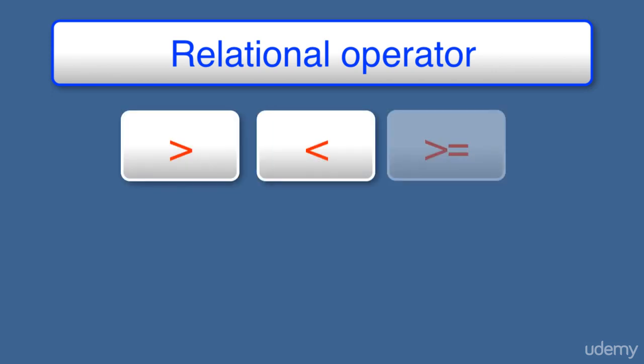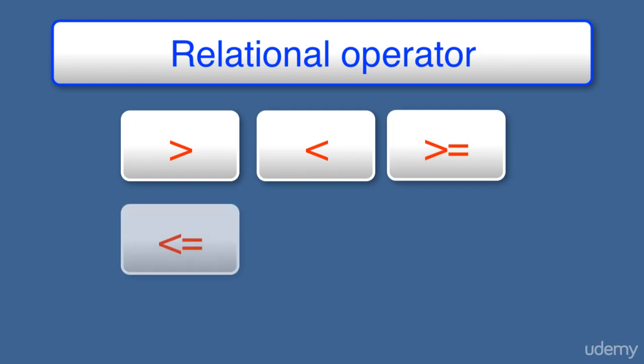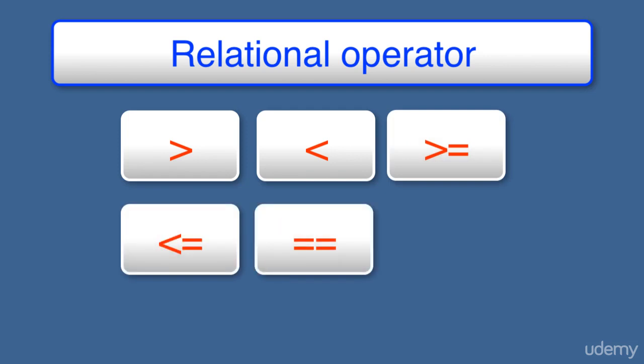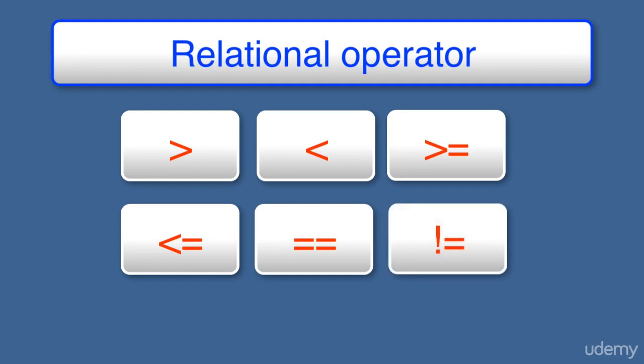The six relational operators are: greater than, less than, greater than equals to, less than equals to, equals to (for comparing the equality of two values), and not equals to. I'll show you some fundamental concepts on these operators and also how they work with some programming examples.